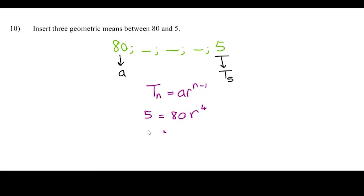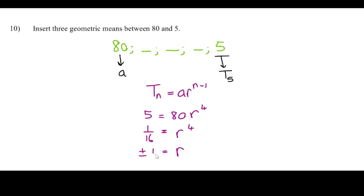So 5 = 80·r⁴. Dividing both sides by 80 we get 1/16 = r⁴. Remember that when we have an even power we could have plus or minus, so r equals plus or minus a half.